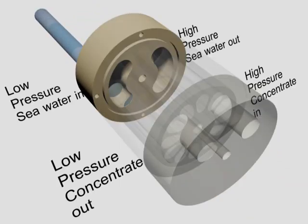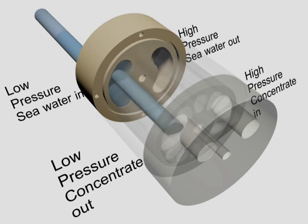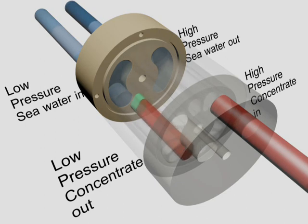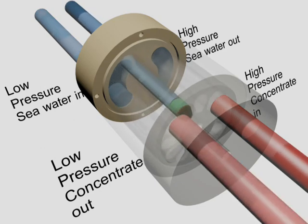Low-pressure seawater enters the PX and fills the rotor. This seawater is then exposed to high pressure concentrate from the membranes. Pressure transfers directly from the concentrate to the seawater inside the rotor ducts.